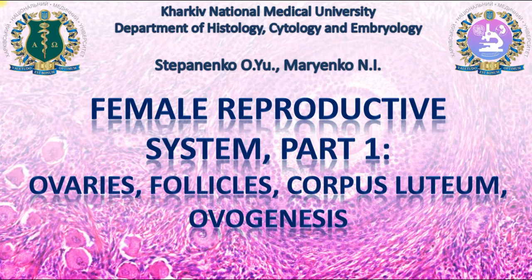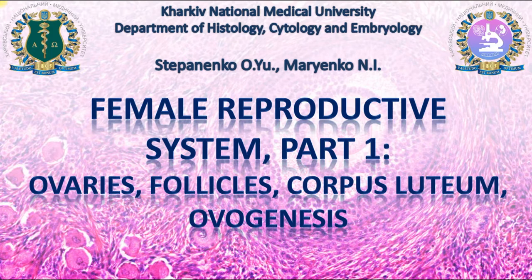Dear students, today we will talk about histology of the organs of the female reproductive system. This topic is divided into two parts. The first part includes histology of the ovaries, follicles, corpus luteum, and ovogenesis. In the second part we will talk about the uterus, fallopian tubes, vagina, mammary glands, and the menstrual cycle.